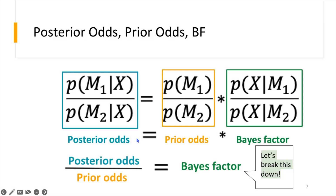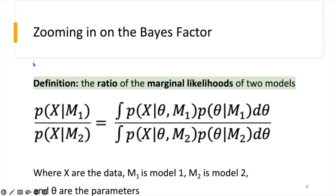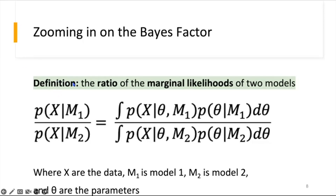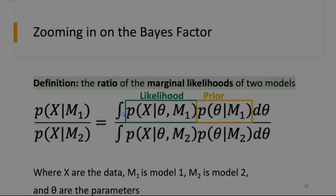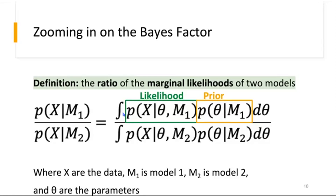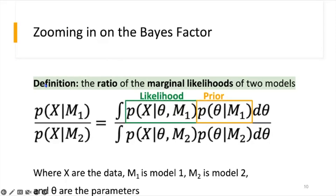Let's further break down the Bayes factor. As mentioned, the Bayes factor is the ratio of the marginal likelihoods of the two models. We can expand this by taking the integral of the probability of the data given the parameters under model one, and similarly for the denominator under model two. Here, X is our data, M1 is model one, M2 is model two, and theta represents the parameters. The first piece is the likelihood — the probability of the data given theta under model one. The second piece is the prior — the probability of theta given model one. By integrating, we obtain the marginal likelihood.